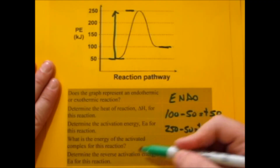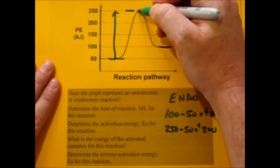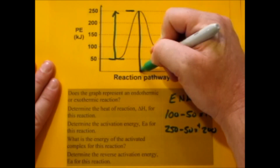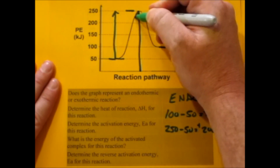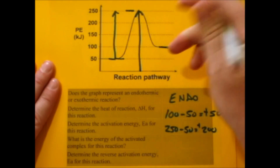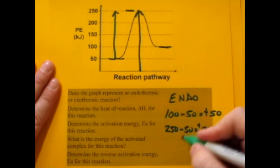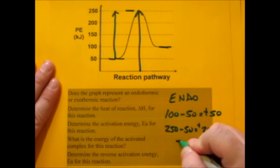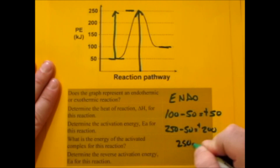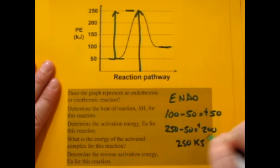What's the energy for the activated complex? The maximum energy achieved in a reaction is called the activated complex, and that's 250 kilojoules.